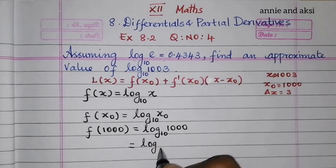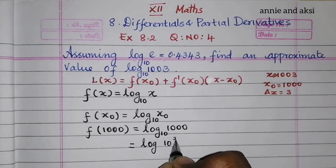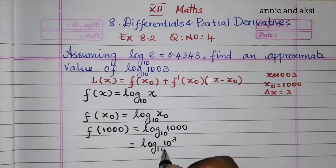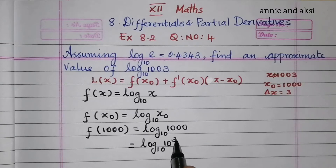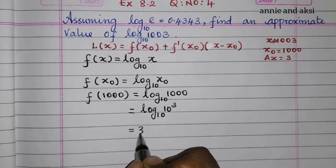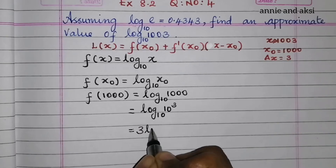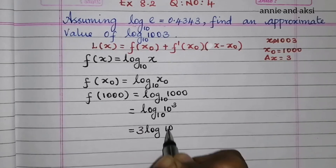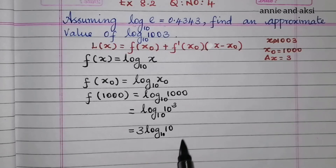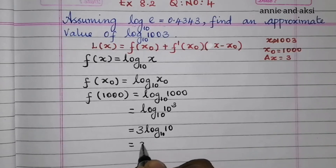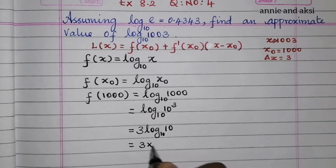So f(x₀) = log 1000 to the base 10 = log 10³ to the base 10 = 3 · log 10 to the base 10 = 3 × 1 = 3.